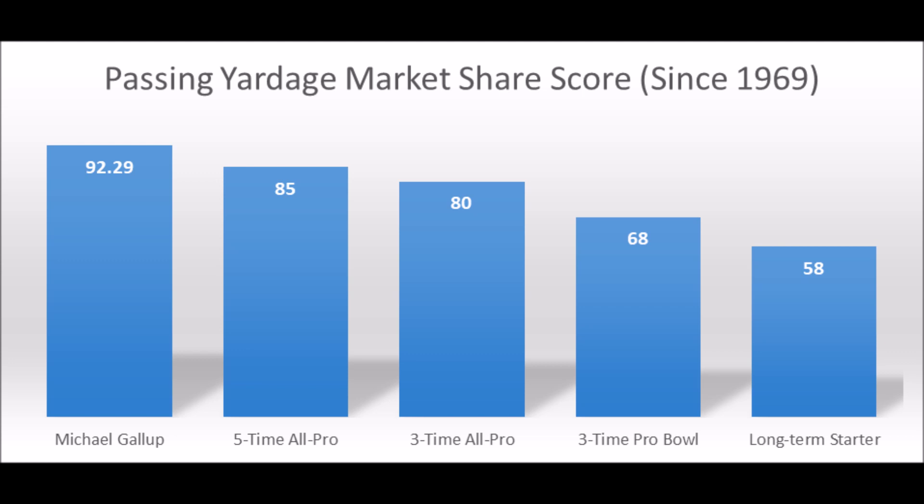Keep in mind, there is a strength-of-schedule consideration that is a little bit off, because he played in the Mountain West Conference and not the SEC or Big Ten. But you still want guys to be really, really productive. So despite the fact that his competition wasn't necessarily the best, it's still good for a wide receiver to score 90-plus in any conference.